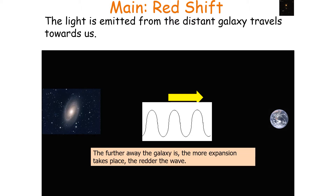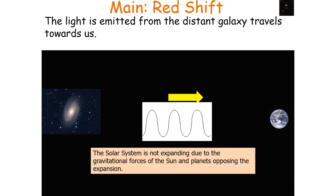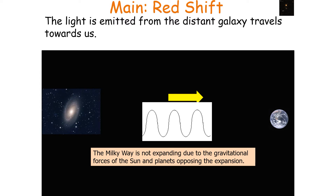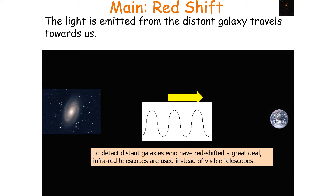The further away a galaxy is, the more expansion that takes place and the redder the wave. The expansion of the universe can only happen where there's little matter, in the voids between galaxies. Our solar system is not expanding due to gravitational forces opposing this expansion, and the Milky Way is also not expanding for the same reason. If the wavelength expanded into the infrared region, it would be invisible to humans, so infrared telescopes are used to detect distant highly redshifted galaxies.